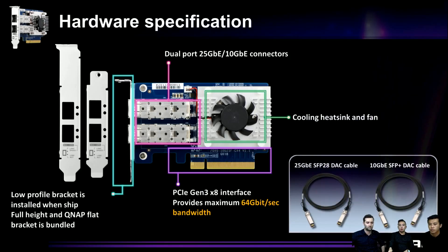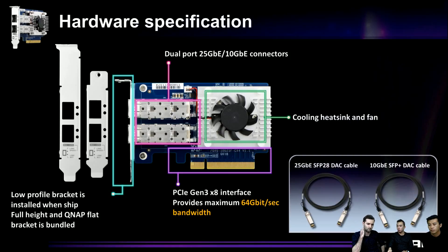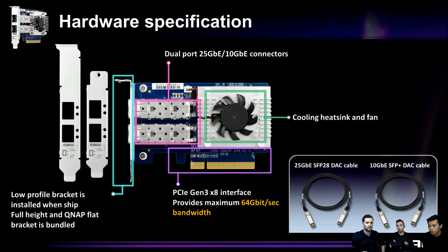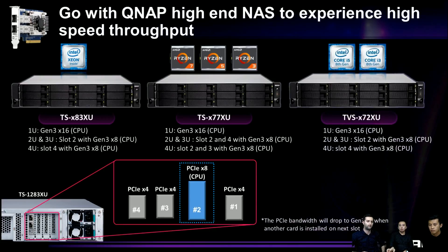Here are some additional details: both cards feature dual-port connectors, come with a low-profile bracket installed, and include a full-height bracket in the bundle. The PCIe interface is Generation 3 x8, providing 64 gigabits per second of bandwidth. For cabling: if you are using 25 gigabit you need SFP28 cables; for 10 gigabit you need SFP+ cables.